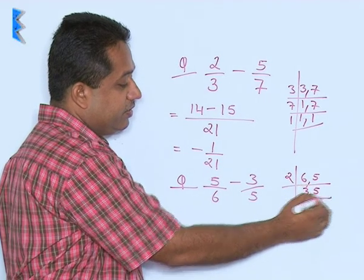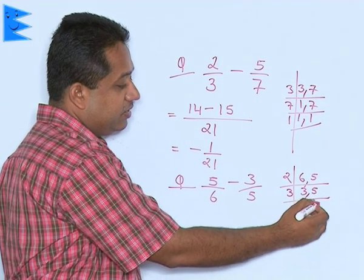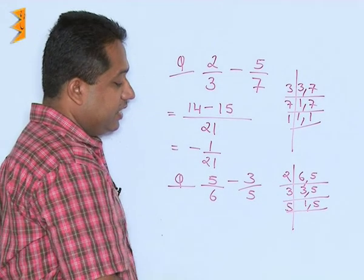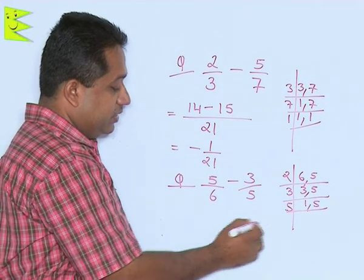So, 2 goes 3 times here, again with 3 here and finally with 5. So, we get 2 into 3 into 5 that is 30. So, we know that the LCM is 30.